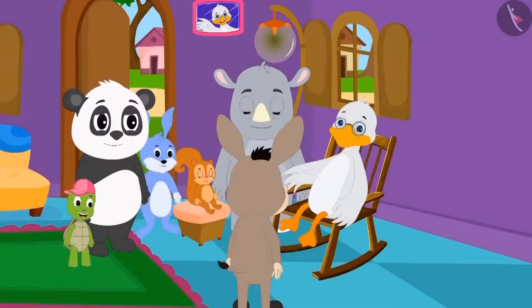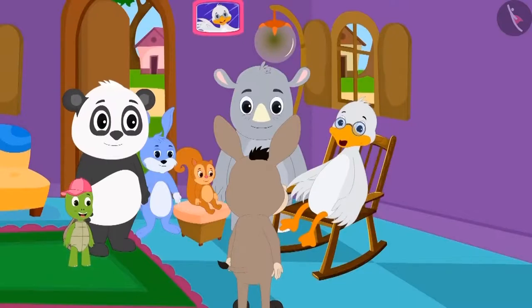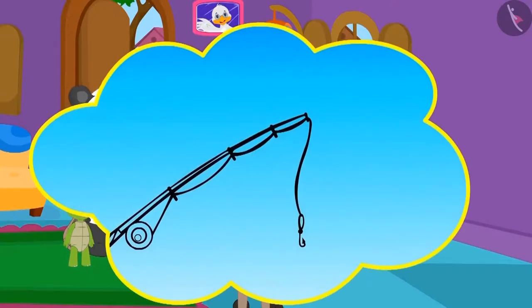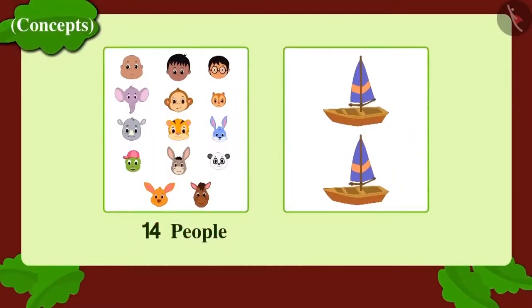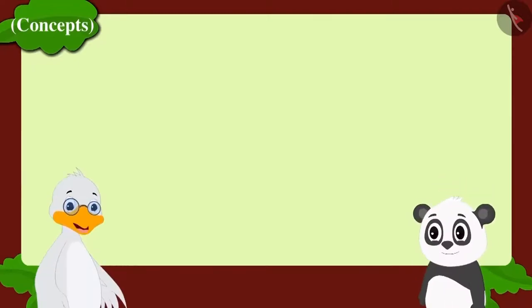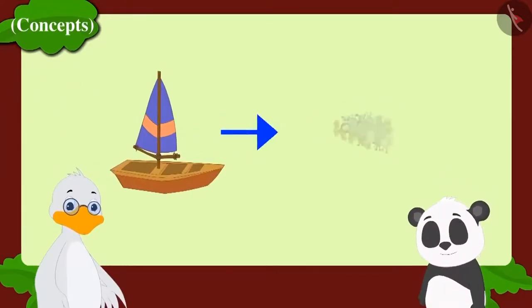One day, Badbole Chacha and some other people were going for fishing to the river together. They were 14 people in all, and they had 2 boats. Chacha asked Golu how many people could go in each boat.